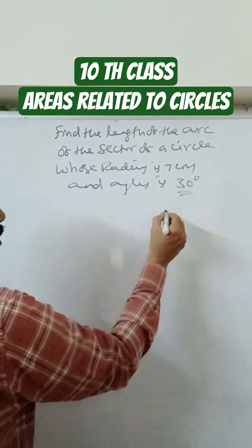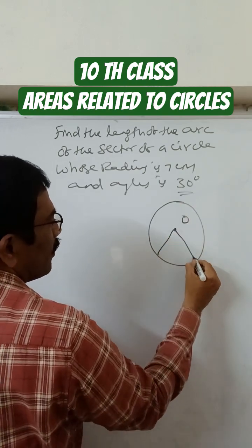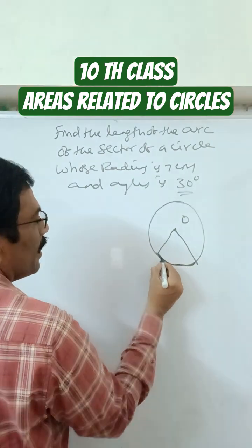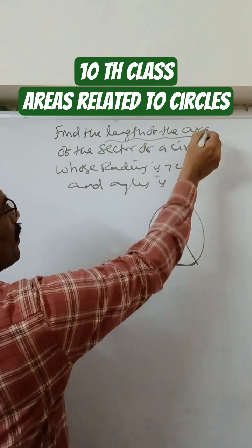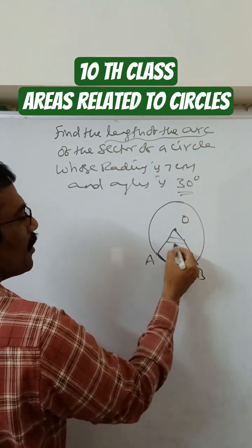Okay children, this circle with center O. So this sector - understand - this length of the arc. Find the length of the arc of the sector. This is the sector.